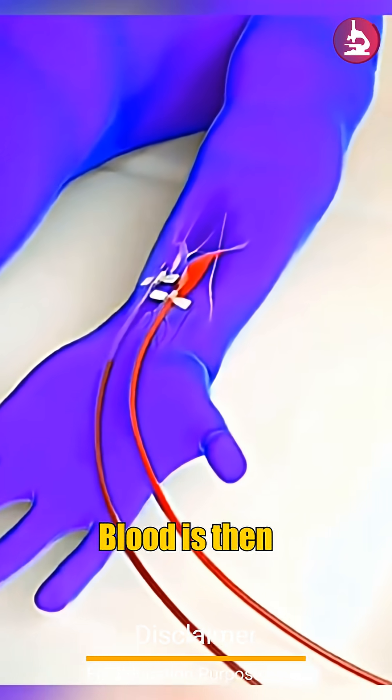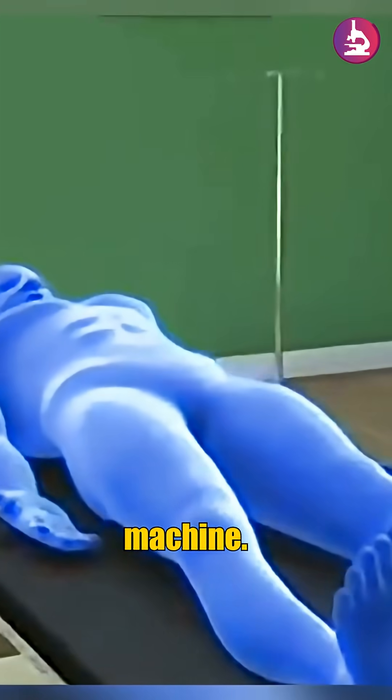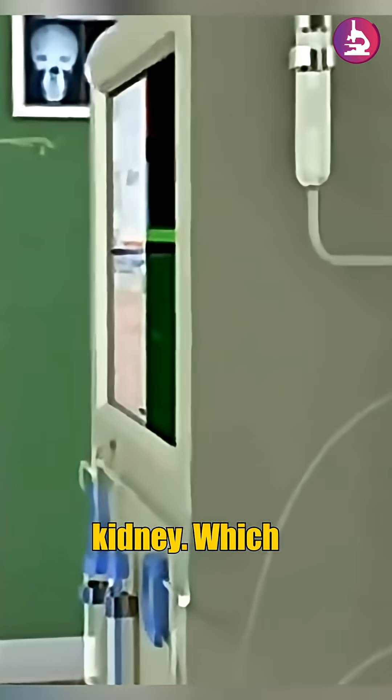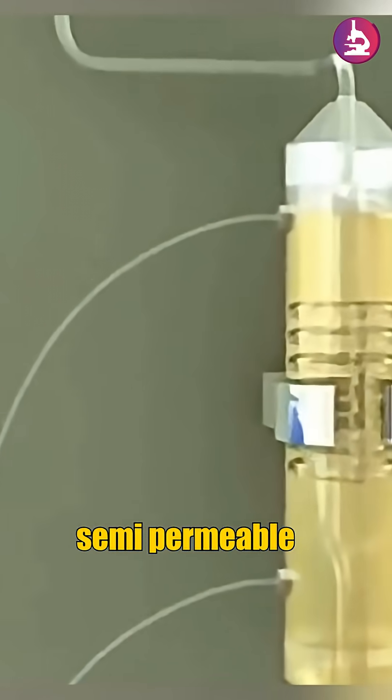Blood is then withdrawn from the body and directed into a dialysis machine. Inside the machine, the blood flows through a dialyzer, often referred to as an artificial kidney, which contains a specialized semi-permeable membrane.